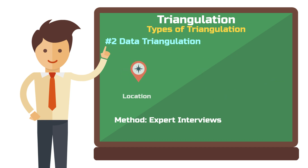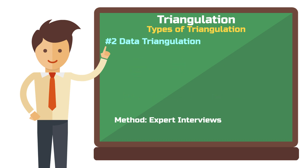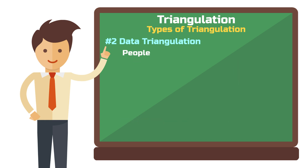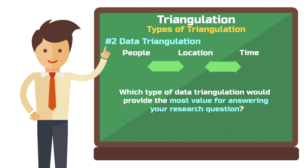The next dimension would be location. In the same scenario, you could triangulate the place where you collect data — find two other companies where the same system is adopted and interview the heads of the logistics department in both companies. This way you can make comparisons and examine the phenomenon from two different perspectives. Finally, and I always recommend this, you can triangulate within the sample of data subjects. In addition to the logistics manager, you could include a warehouse specialist and a mid-level manager. Of course, you can triangulate in all three dimensions — people, location, and time — but this also increases the effort. Consider which type of data triangulation would provide the most valuable insight for answering your research question.